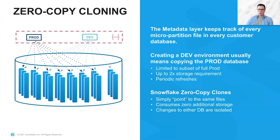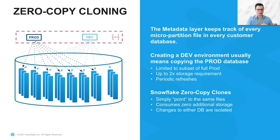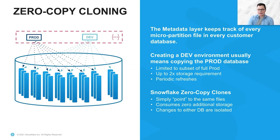Zero copy cloning is another big one. What's really exciting about this feature is that it enables fundamentally new things that would normally be incredibly difficult or costly to do. For example, creating a dev environment that is a literal clone of your production environment, but making sure any changes to your dev environment don't impact production. This means you're not actually duplicating the data on disk, so you're not incurring double the storage costs. It also means you get faster access to new production data because you're not literally copying it — zero copy clones are simply a pointer to the same data on disk. This is definitely one of my favorite features of Snowflake.